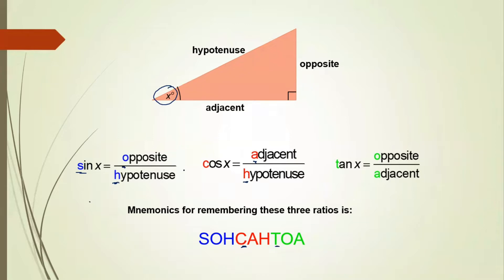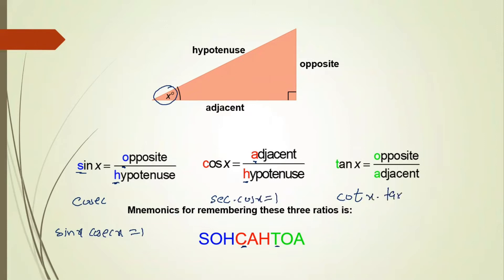We have additional ratios: cosec, secant (sec), and cotangent (cot). Remember: sine and cosec are reciprocals, so sine x × cosec x = 1. Similarly, sec x × cos x = 1, and cot x × tan x = 1. If sine x is opposite upon hypotenuse, then cosec x is hypotenuse upon opposite. If you know one ratio, you can find the others.